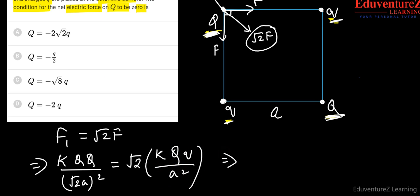After solving, we get a lot of terms cancelled out here. So A is cancelled out, capital Q is cancelled out, K is cancelled out. So we get Q upon 2 equal to root 2Q. So capital Q is equal to 2 root 2Q.